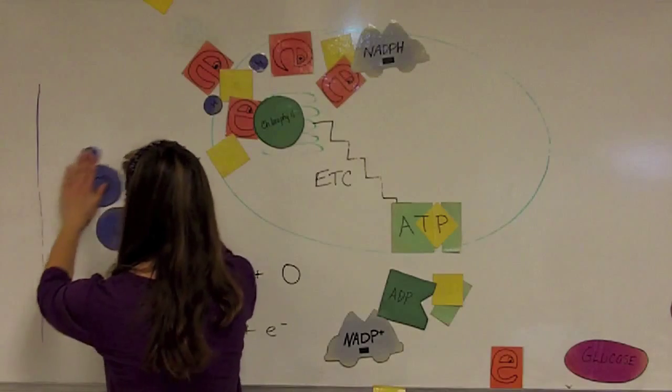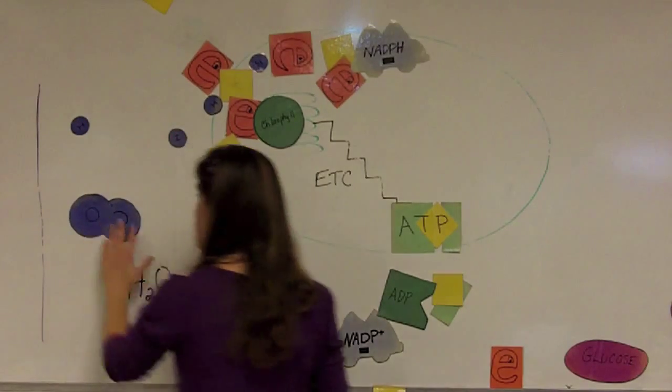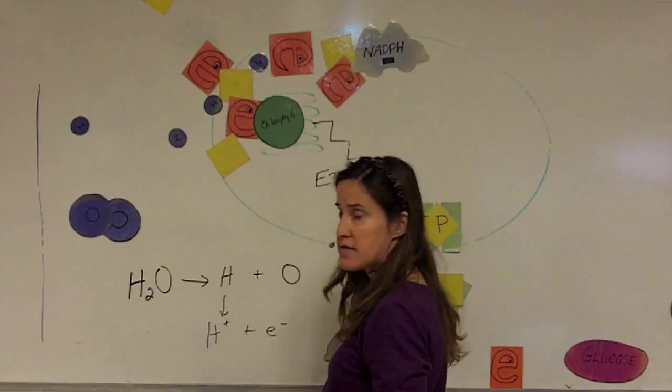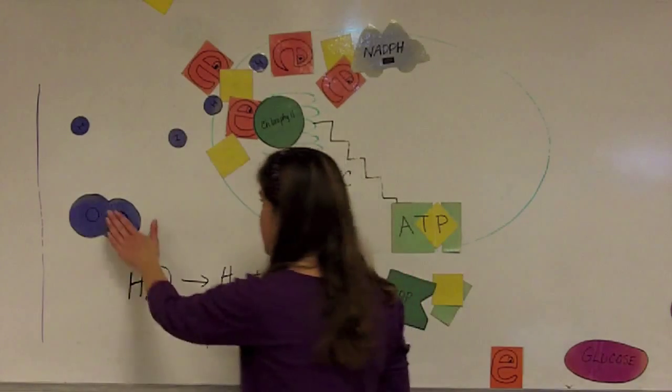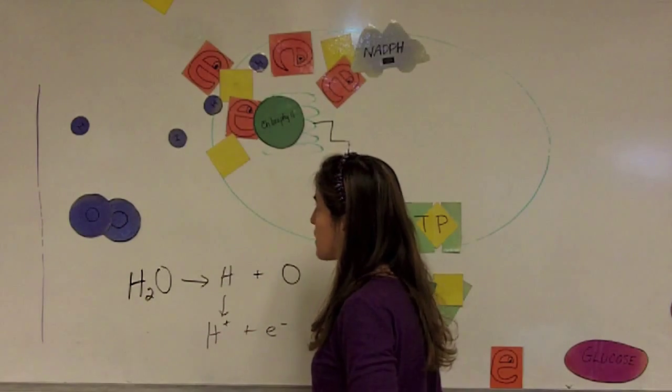When you do this with multiple water molecules, you free up oxygen atoms. They combine to form O2, or oxygen gas. This diffuses out of the chloroplast, out of the cell, out through the stomata of the plant.